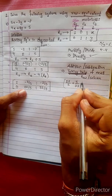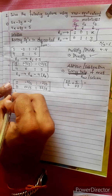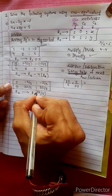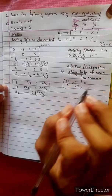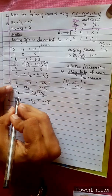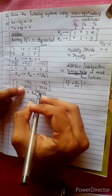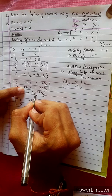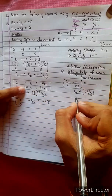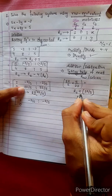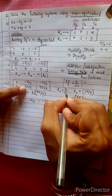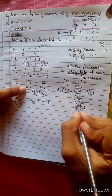Now multiply r2 by 5 by 22. So r2 becomes: divide each entry by 22 by 5, which is the same as multiplying by 5 by 22. R1 stays as: minus 3 by 5, minus 2 by 5. R2 is multiplied by 5 by 22 to cancel the coefficient.